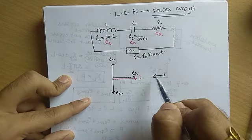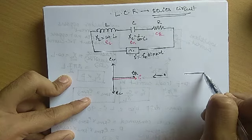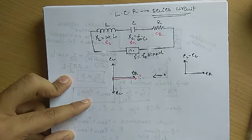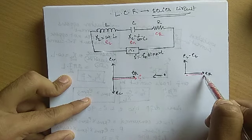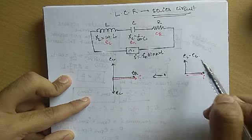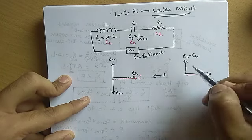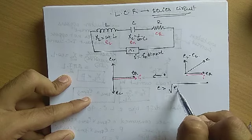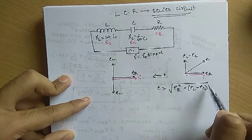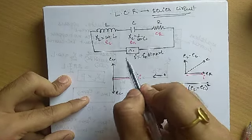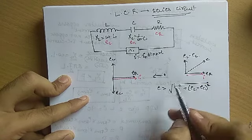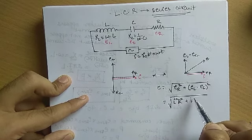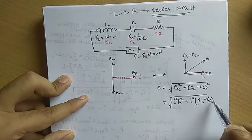Treating these as vectors, we have ER along the current direction and (EL − EC) perpendicular to it. The resultant of these two perpendicular vectors gives E = √(ER² + (EL − EC)²). Since the same current flows through all three series components, we can write this as E = I·√(R² + (XL − XC)²).